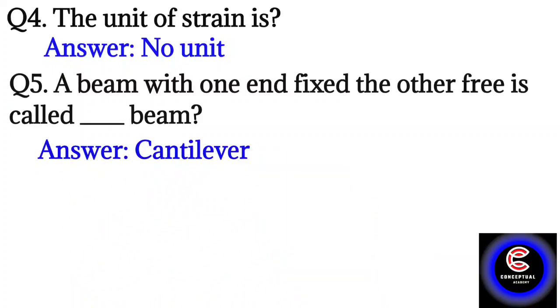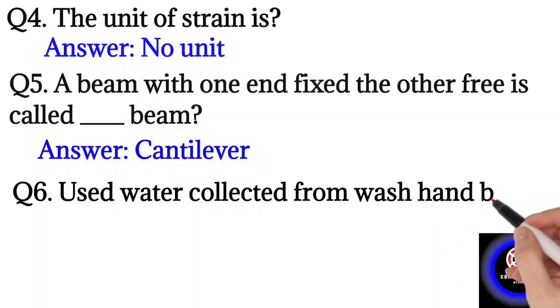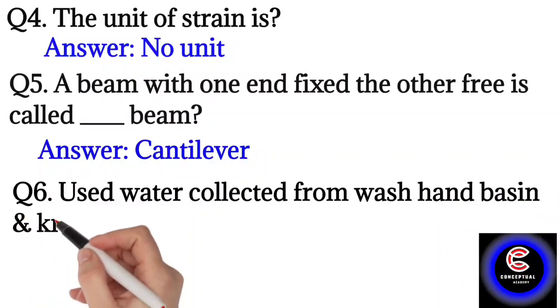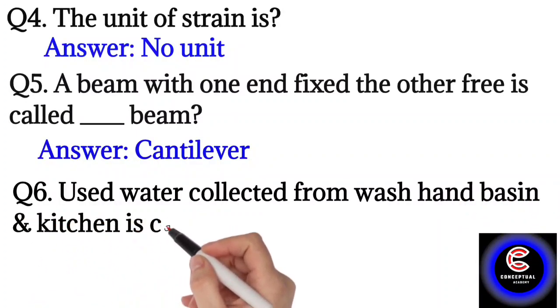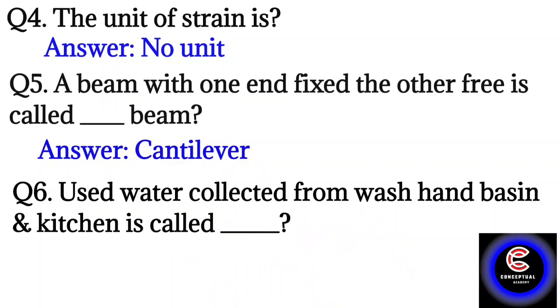Question number six: water collected from a washbasin and kitchen is called grey water.